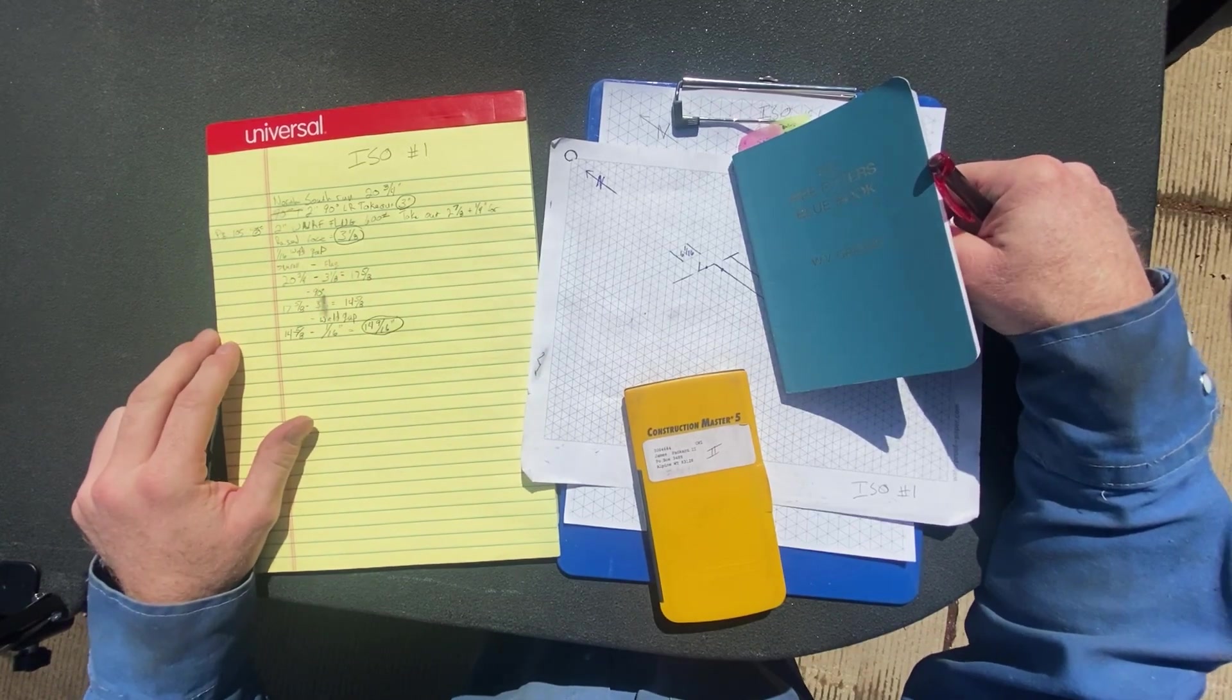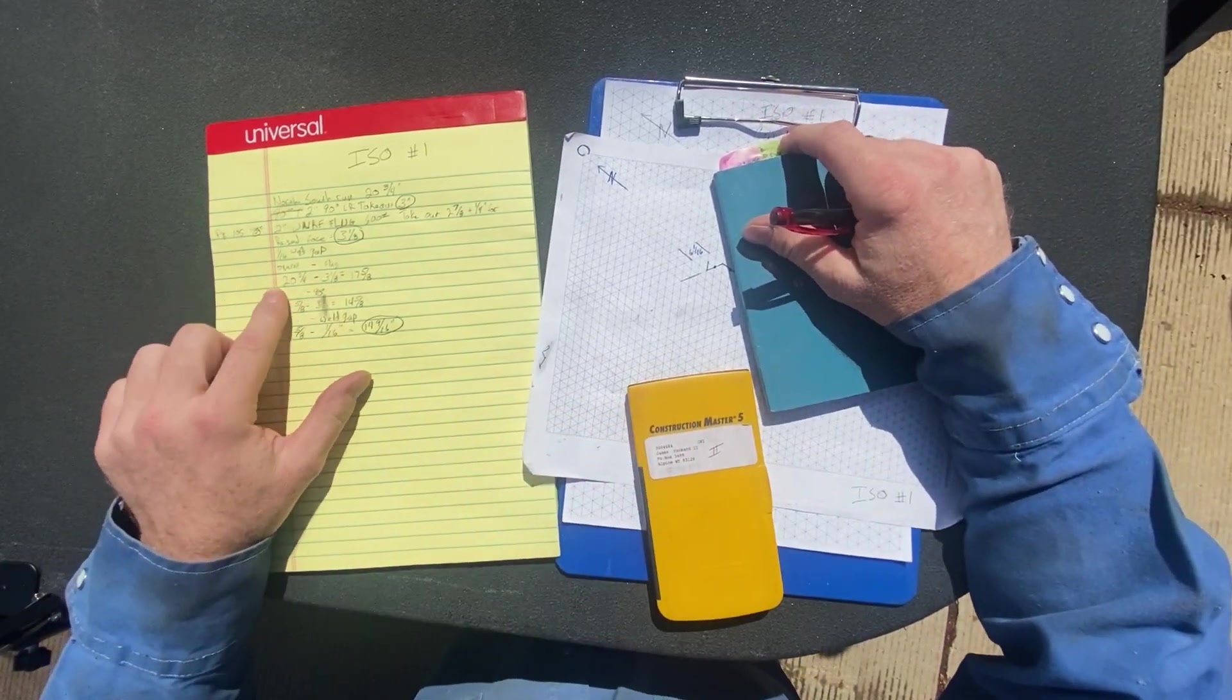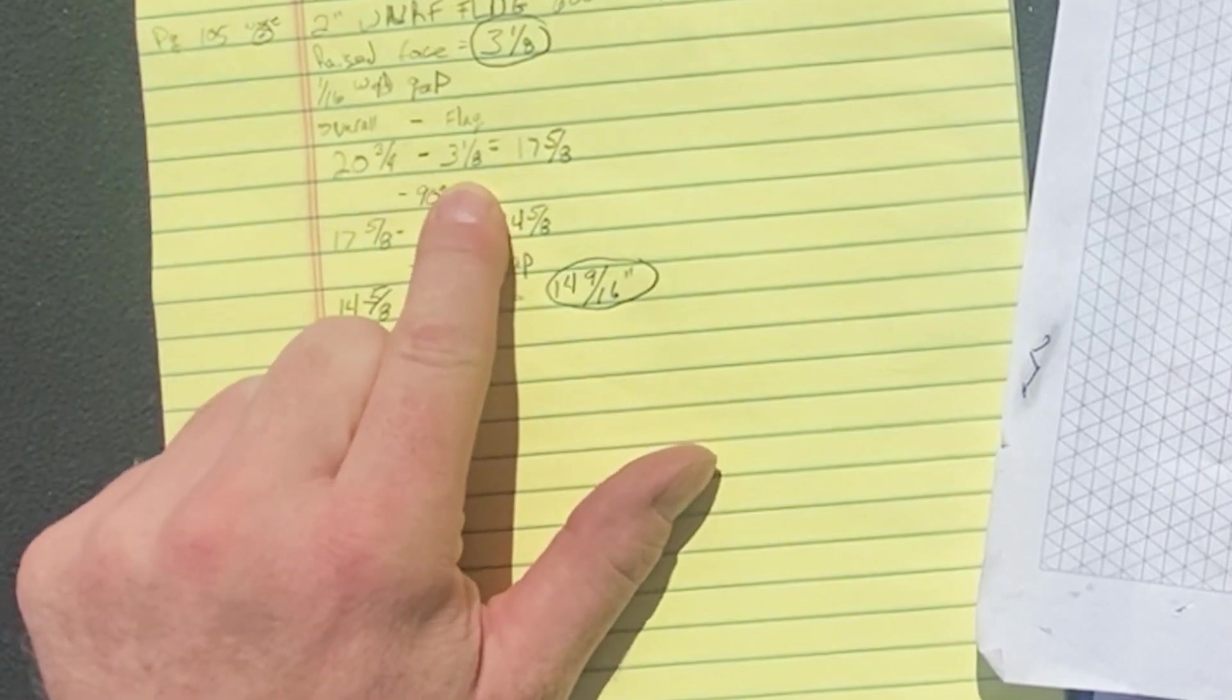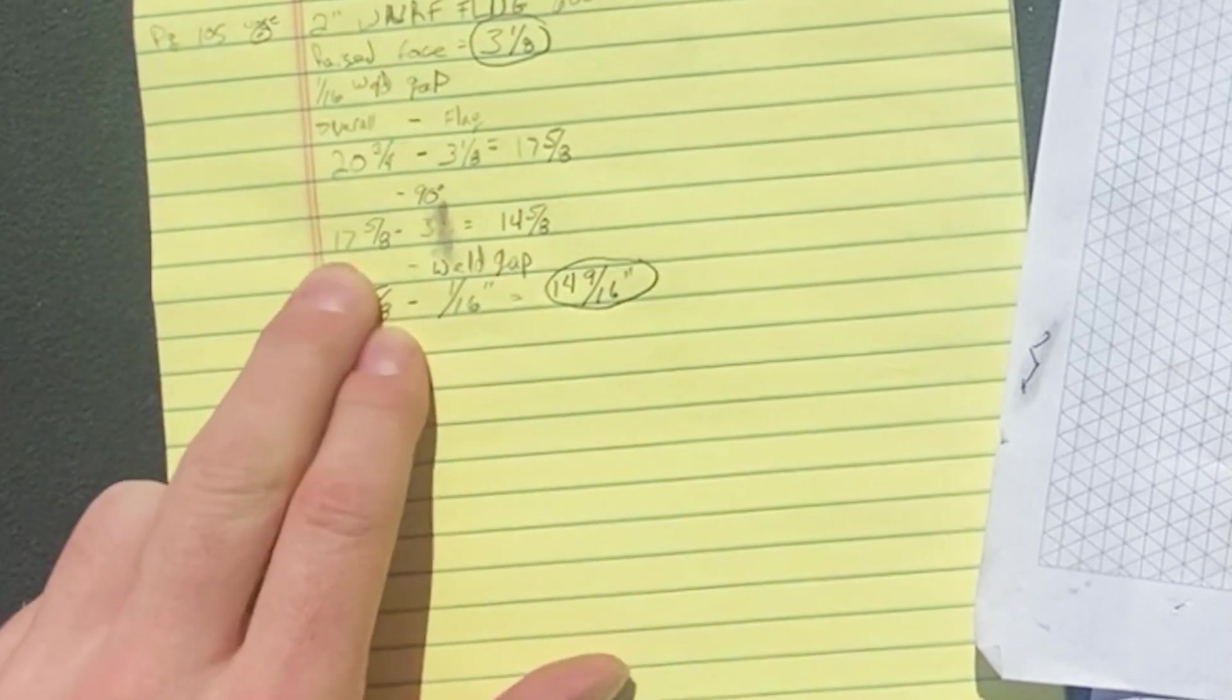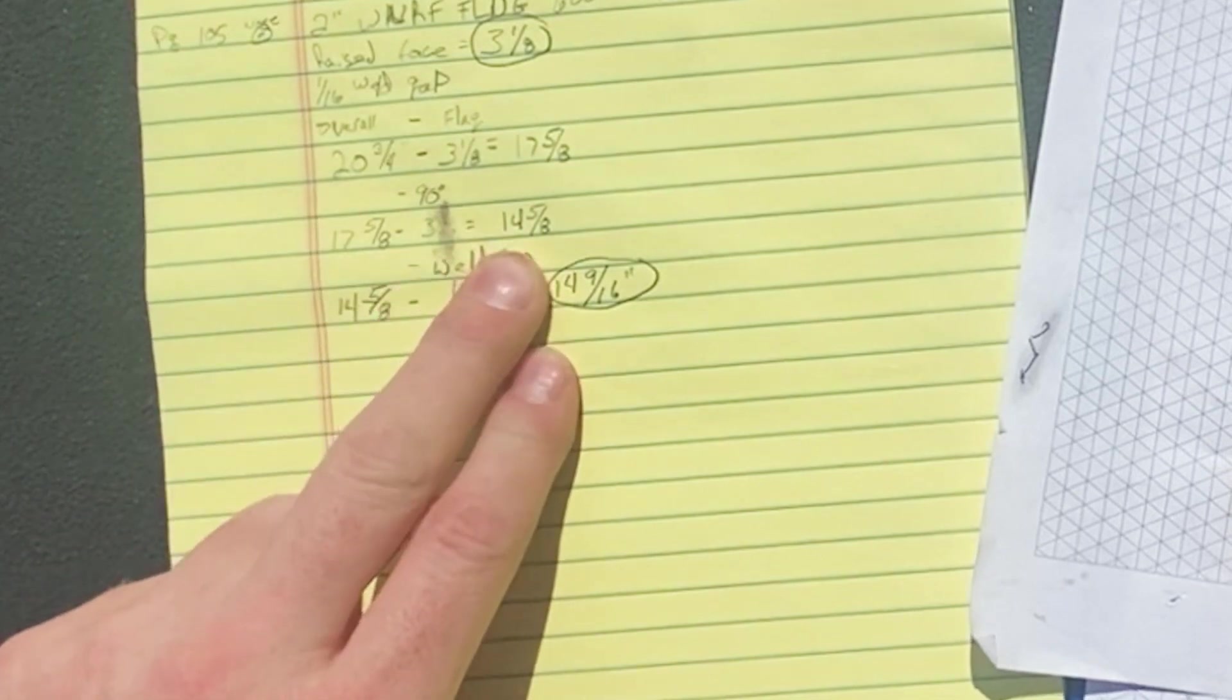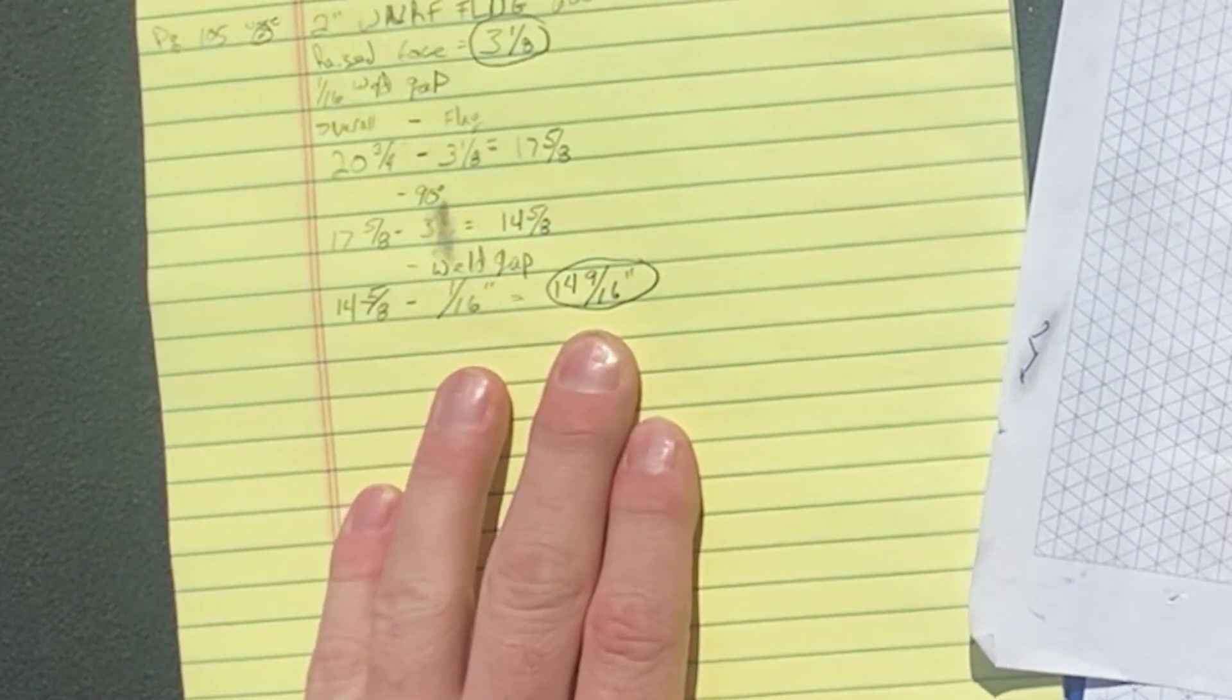Subtract your sixteenth of an inch for your weld gap. Sometimes you can just slam it up, cut your land on there and that'll give you your gap. So we have your overall length minus your flange, 20 and three quarters, minus three and an eighth. That gives us 17 and five eighths. Minus your 90 degree, your two inch 90 degree, which was three inches takeout. So 17 and five eighths minus three inches, that equals 14 and five eighths. Minus your weld gap, 14 and five eighths minus a sixteenth, makes it 14 and nine sixteenths.